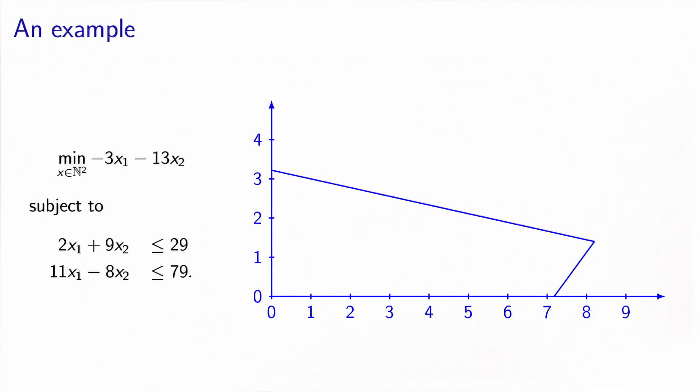Let's see an example of an integer optimization problem. We want to minimize a function of two variables x1 and x2 that are integers, subject to two linear constraints: 2x1 plus 9x2 is less or equal to 29, and 11x1 minus 8x2 is less or equal to 79.